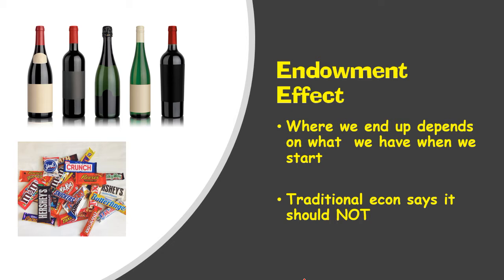Here's a simpler example. Take three randomly selected groups of students. Group one, you give them each 10 candy bars and say, after class on the way out the door, you can trade your candy bars in for dollar bills — any combination you want. So you can leave with 10 candy bars, 10 dollar bills, or any combination in between, but you start out with 10 candy bars.